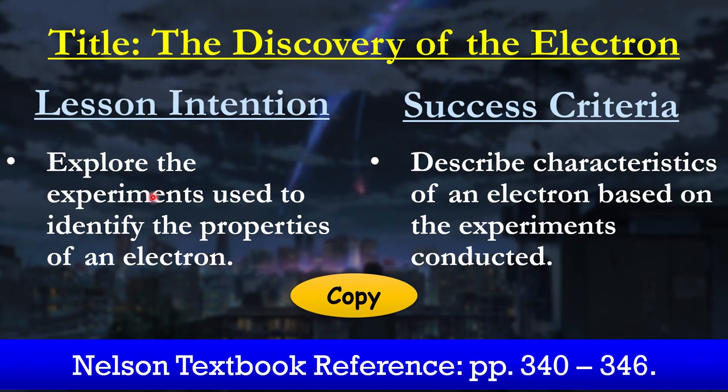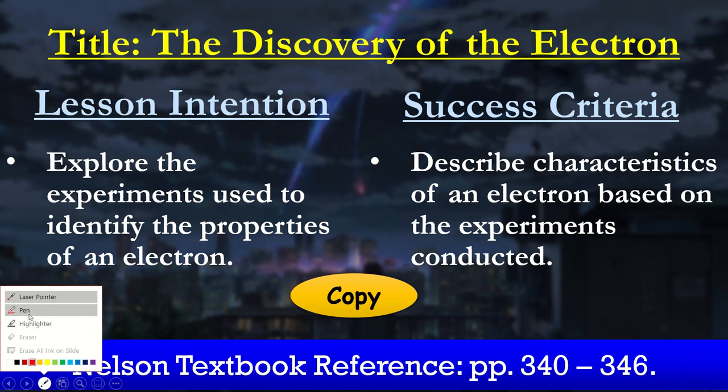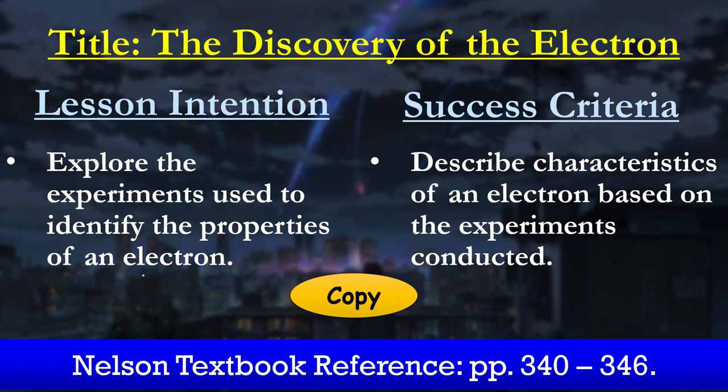We're going to explore experiments used to identify the properties of the electron. In this presentation, you'll hear me use the wording of cathode rays more often than actually saying electrons, because at a certain point in time, cathode rays was the known wording for the electrons. We're going to look at some characteristics that gave us the idea that the electron is both negatively charged and also the fact that it is a particle.